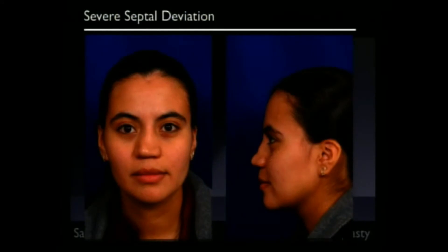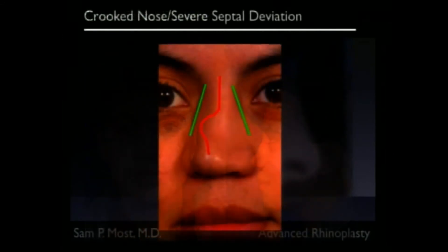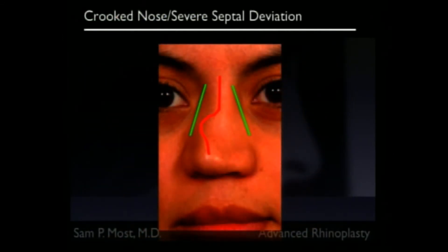There are times when the septum is so deviated that there's an obvious external deformity. This is an example of a patient who had a very severe septal deviation due to trauma as a child, and the septum grew in the wrong direction. You can see flattening of the nose in the central area, and on the side view there's what we call a saddle, because the septum is about 80 to 90 degrees away from where it's supposed to be going, literally blocking both sides of her nose. She essentially has no nasal airway on the left side and only a partial one on the right.